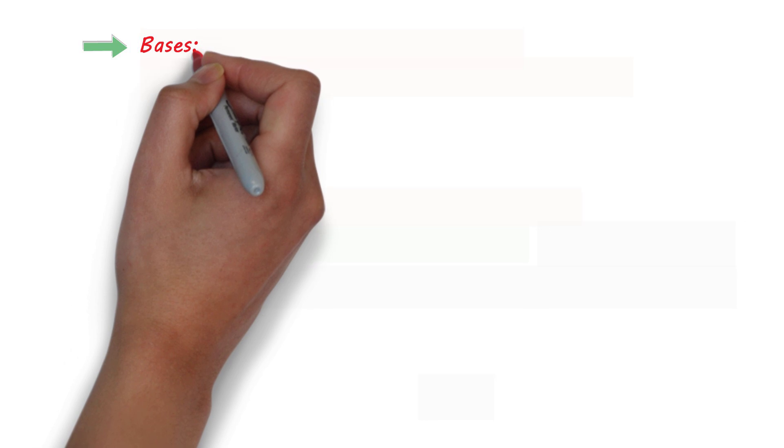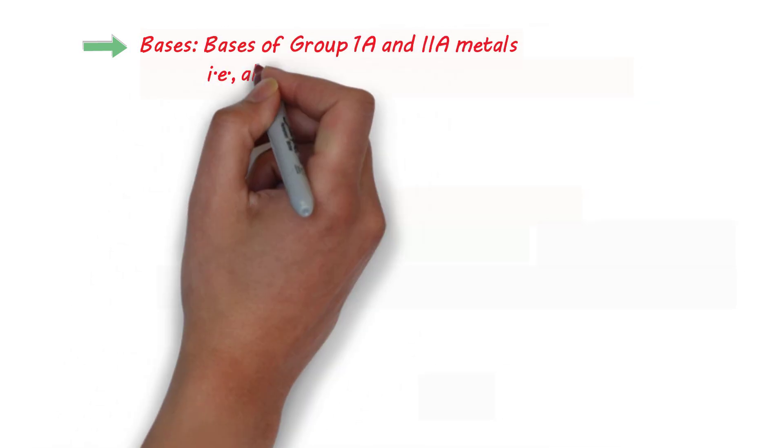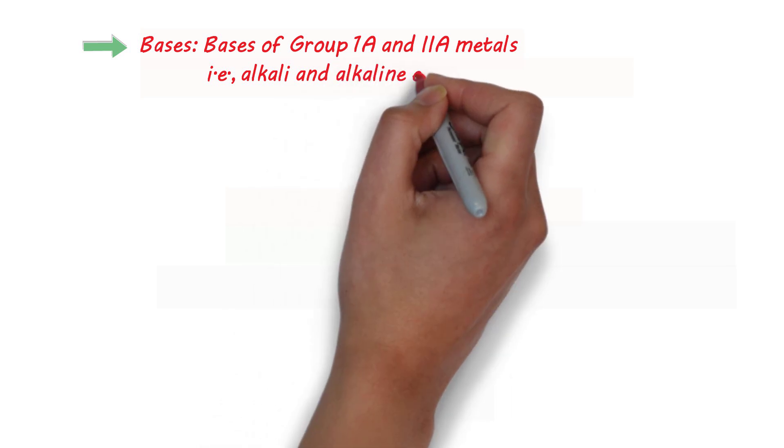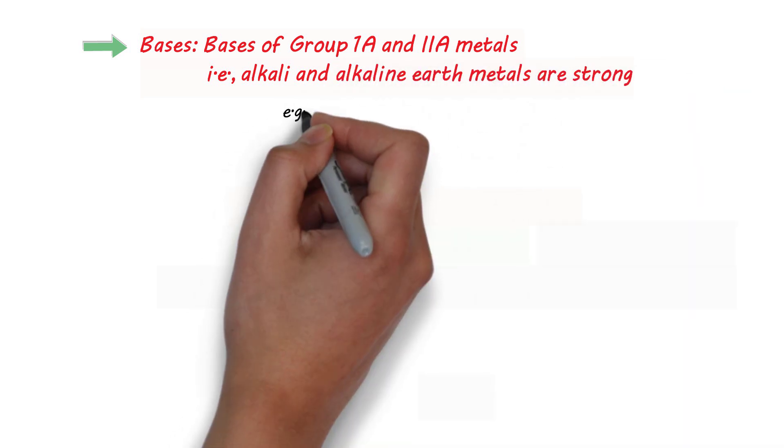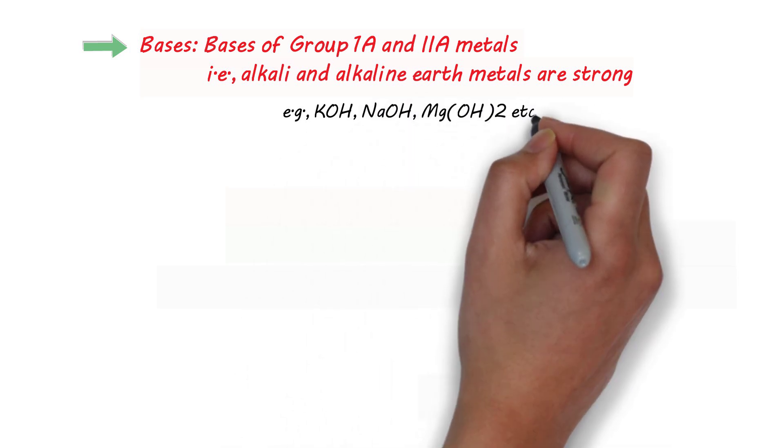Among bases, if we have the bases of group 1A and 2A metals, that's alkali and alkaline earth metals, they are strong. For example, potassium hydroxide, sodium hydroxide, magnesium hydroxide, etc.